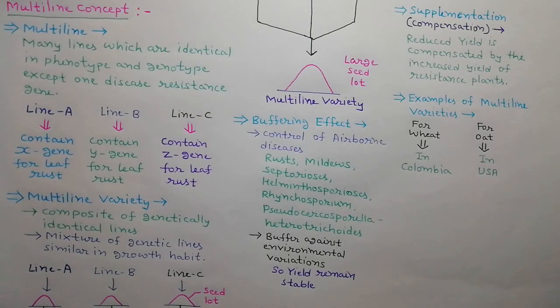Multiline varieties have already been produced for wheat in Colombia and for oats in the USA.